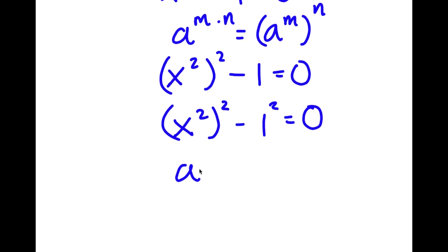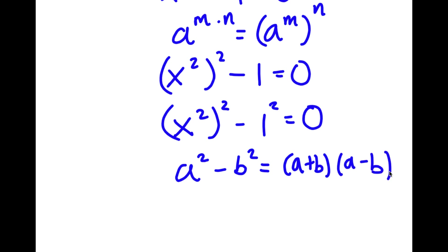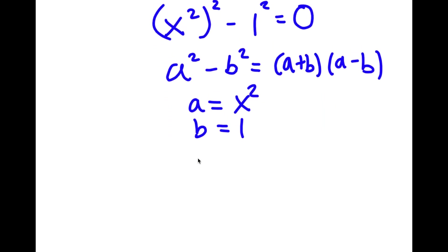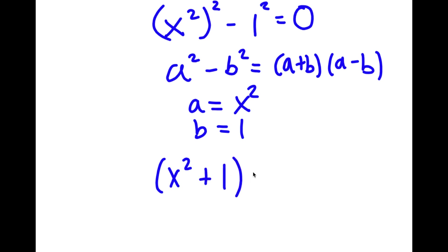If I have something in the form a squared minus b squared, this equals a plus b times a minus b. So in this case, a is x squared and b is 1. So I have x squared plus 1 times x squared minus 1, and this is equal to 0.